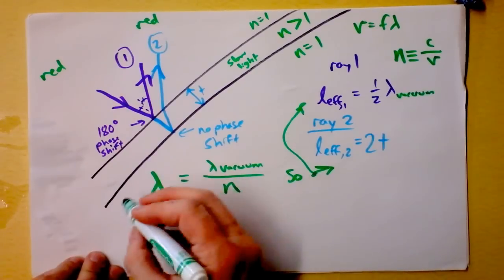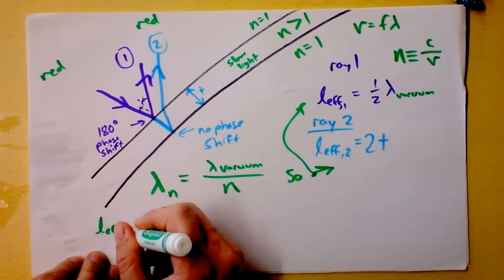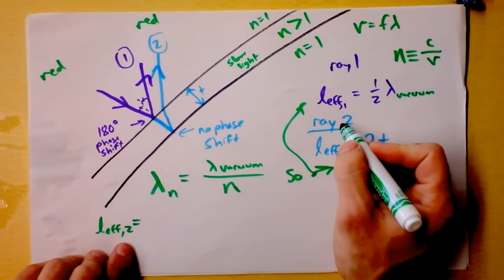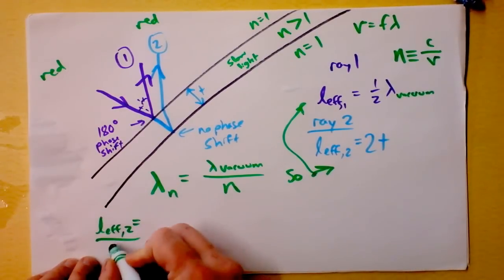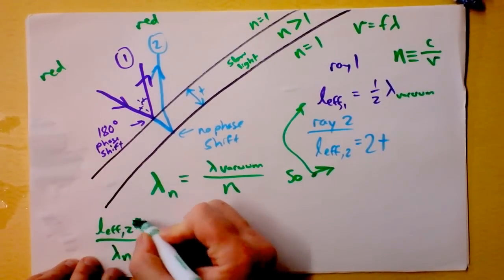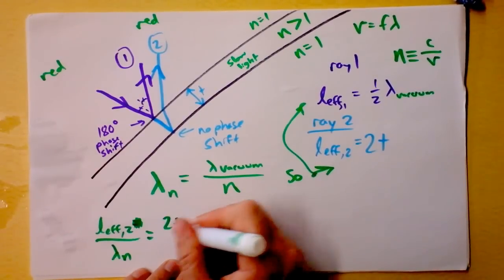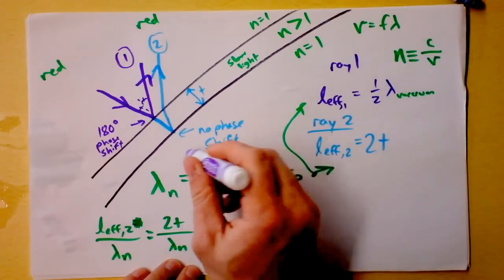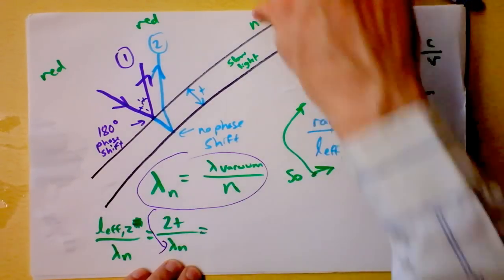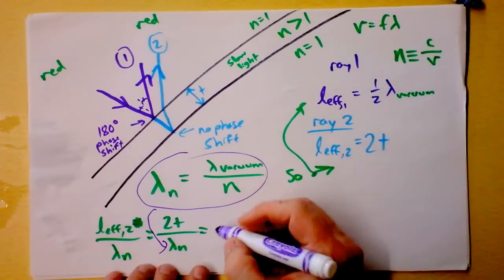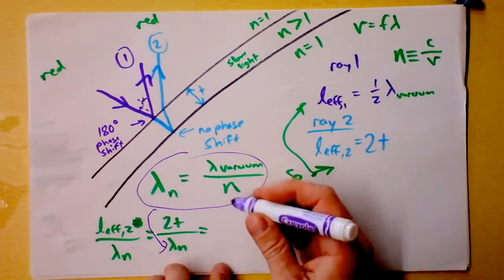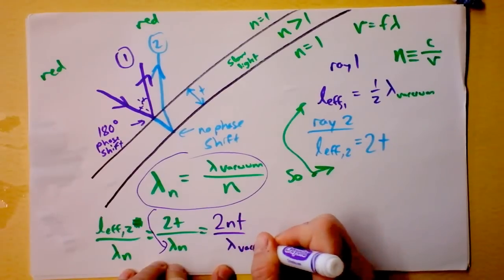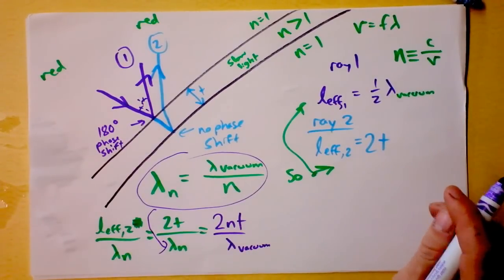Here's what I'm planning to do. I'm going to say L effective. This is, I'm justified in doing this because, well, it's going to help me. So I'm just going to take this L effective 2 and I'm going to divide it by lambda n. Now then I take this stuff here, which is just 2t, and I divide it by lambda n. And now I'm going to plug in what lambda n is. I'm taking this guy and I'm going to plug it in right there. And I'm going to get, watch this, there's an n in the denominator of the denominator. So I put it up top, 2 n t over lambda in a vacuum. Ooh, cool.